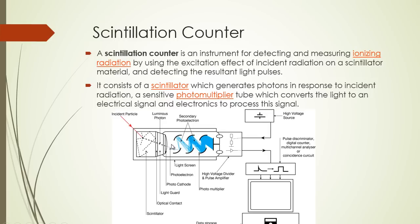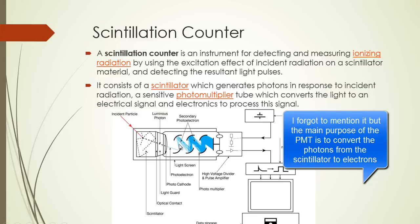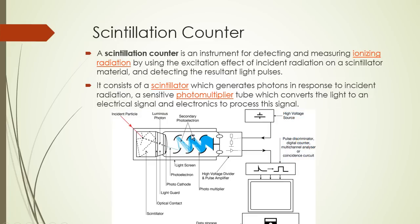Our scintillation counter consists of a scintillator, then a photomultiplier — this section here — whose purpose is to multiply the number of light pulses, because we don't get enough photons from the scintillator alone. We need a multiplier system to amplify the signal, and then we have electronics connected to process that signal.